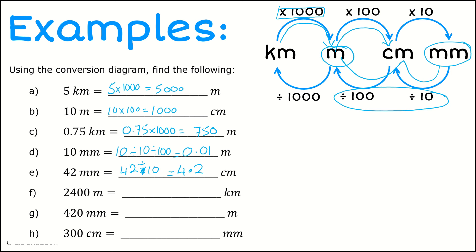Part F: I want to go from meters to kilometers, so I divide by a thousand. So 2,400 divided by 1,000 gives me 2.4 kilometers.